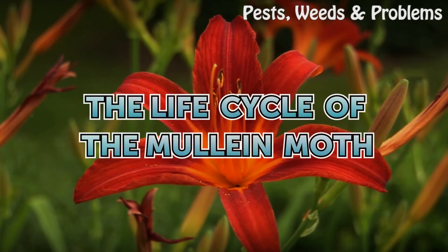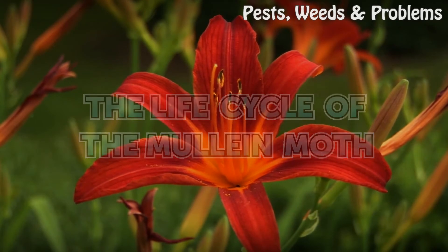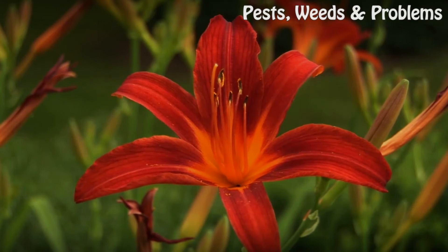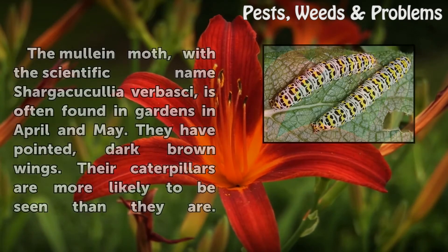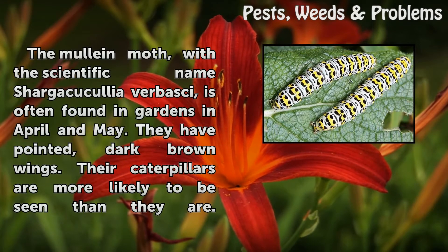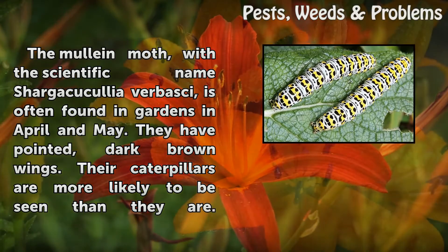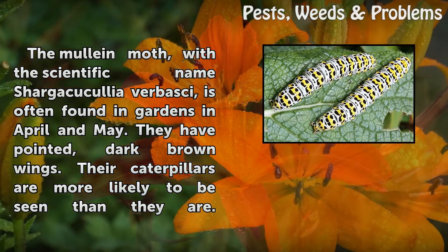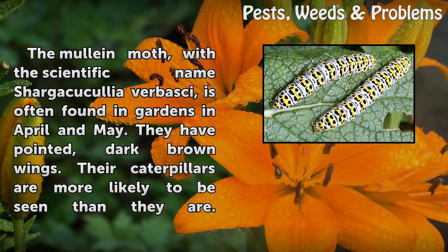The Life Cycle of the Mullein Moth. The mullein moth, with the scientific name Sharga cuchalia verbisii, is often found in gardens in April and May.